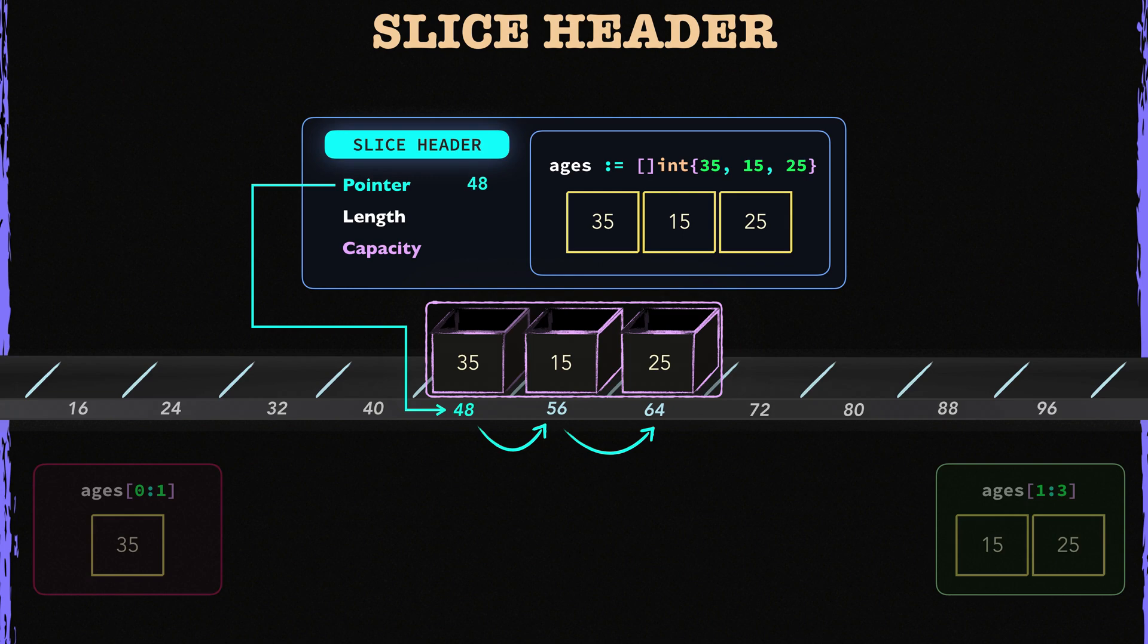So how does it know how many elements it can look for? Well, that is determined by the length field. Here the blue slice's length field is 3 because it has 3 elements. So it can only look for 3 more elements in the memory.